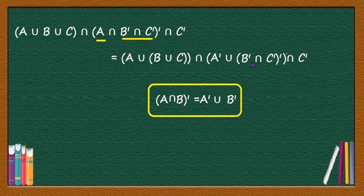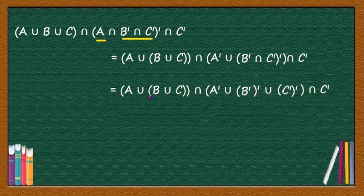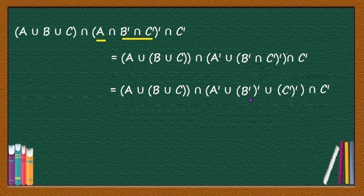Next step: again apply De Morgan's theorem for these two terms, giving (A ∪ B ∪ C) ∩ (A' ∪ B'' ∪ C'') ∩ C'. You know the result: B'' = B and C'' = C.